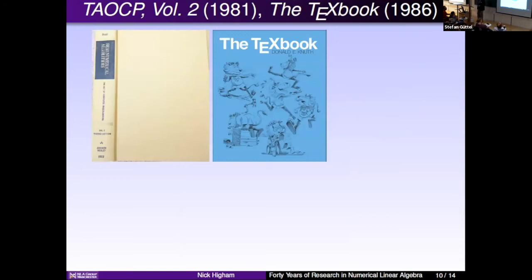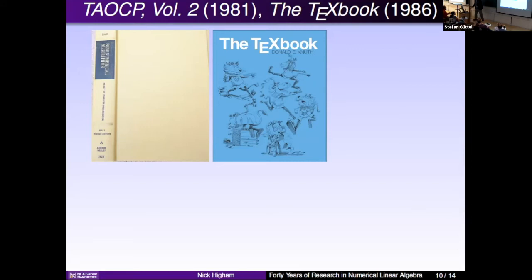Another hero of mine is Don Knuth. I'll mention two things: The Art of Computer Programming — in particular Volume 2, Semi-Numerical Algorithms — which contains a chapter on floating point arithmetic. That's where I learned a lot about floating point. He discusses things like compensated summation, and there are analyses you couldn't find anywhere else. Like Sven and others, I have dared to send Don potential typo emails, and I have a check on my wall for two dollars and fifty-six cents — there must be a lot of money sitting in uncashed checks.